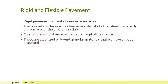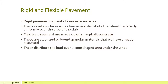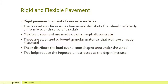Flexible pavements are made up of asphalt concrete — stabilized or bound granular materials. These distribute the load over a cone-shaped area under the wheel because they're flexible; the loading is imposed right there as the wheel moves along. This helps reduce imposed unit stresses as depth increases. For example, a 45-degree cone can reduce tire pressure from 90 psi at the surface to 4 psi at a depth of 16 inches.